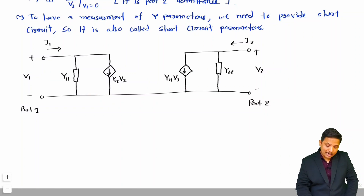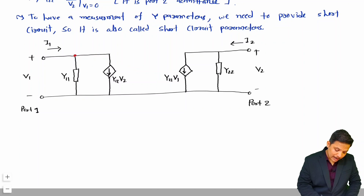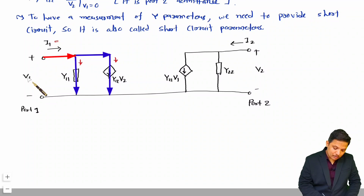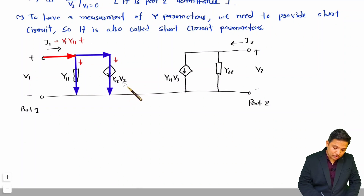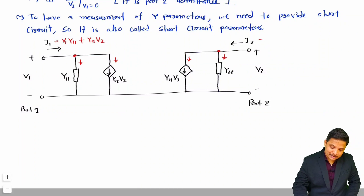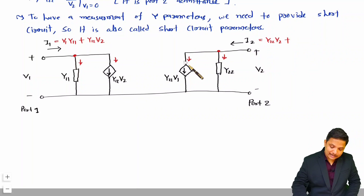To verify the equations using this equivalent circuit, apply KCL at the port 1 node. The entering current I1 equals the current through Y11 plus the current source: I1 = Y11·V1 + Y12·V2. That is our first equation. Applying KCL at port 2: I2 = Y22·V2 + Y21·V1. That is our second equation. Both equations are satisfied by this equivalent circuit.